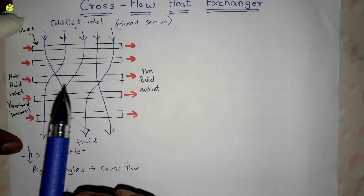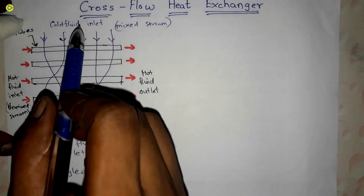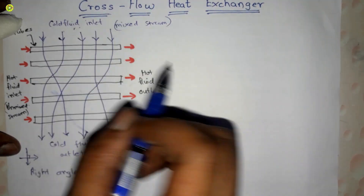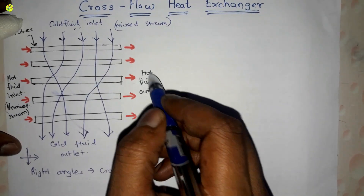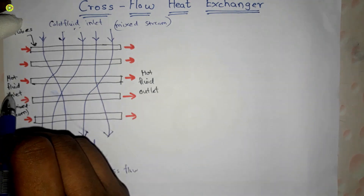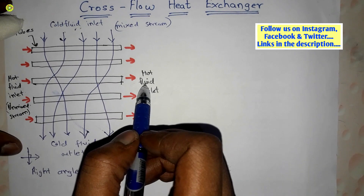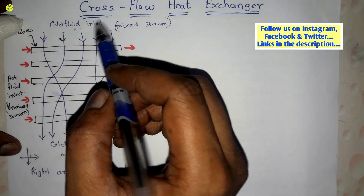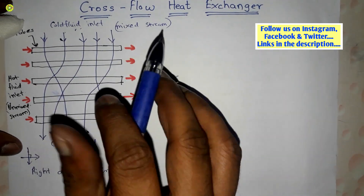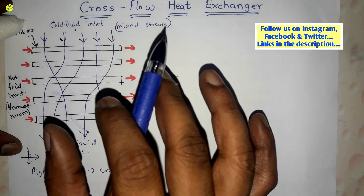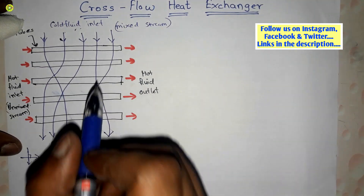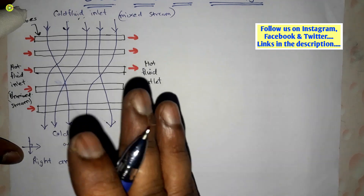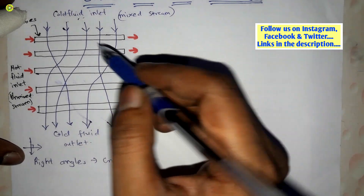In this mixed type, there is no mixing of the hot fluid from inlet to outlet, but there is mixing of the cold fluid from inlet to outlet. In this case, there is uniform temperature at every cross-section.